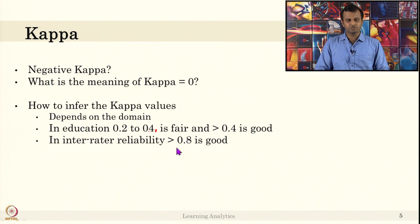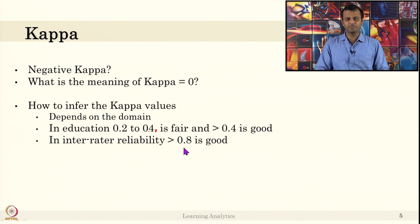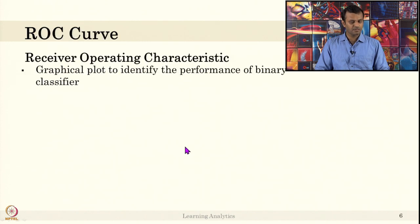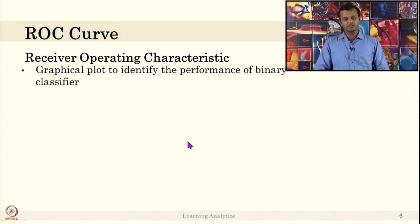After measuring the students' affective states such as frustration again, compute kappa and make sure you get better than 0.8. If you are not at 0.8, you may not be able to publish your research in good reputed journals. So let us move on to the other metrics. In this class we will see two more metrics to pick the better ML classifier.